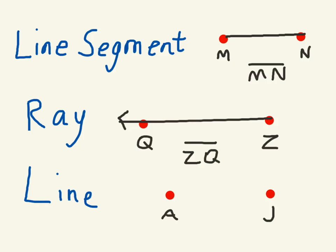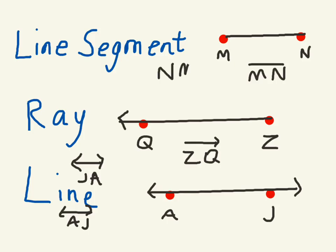And finally, a line goes through both points and keeps going in both directions. So this could be line AJ, or it could also be line JA, reversed. Just like this one up here, it can also be line segment NM.